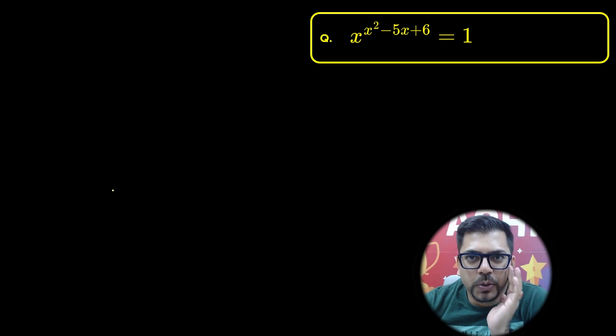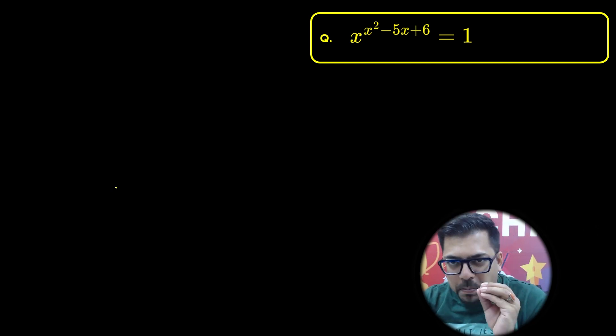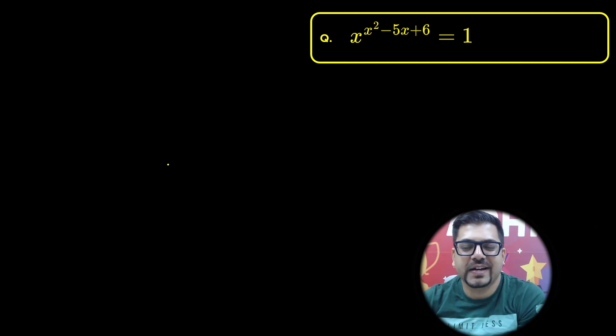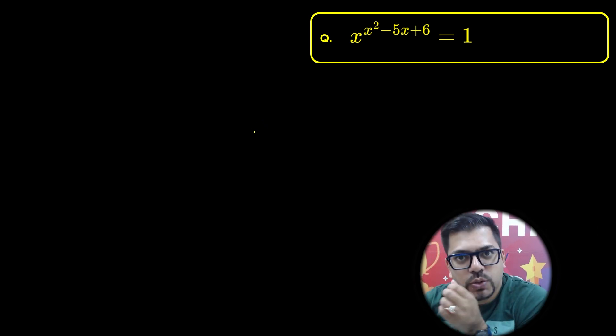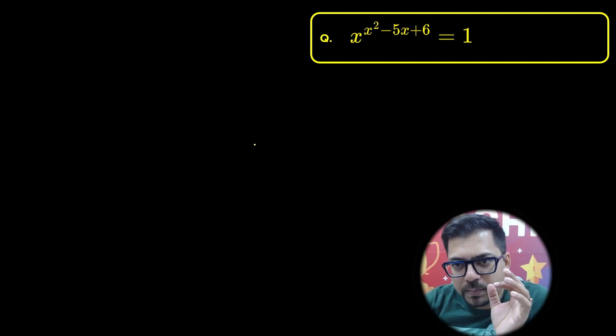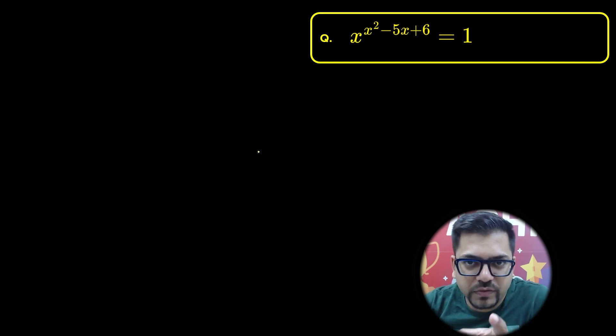Hey guys, so today we are going to talk about this very simple yet beautiful question. The question says that x raised to power x squared minus 5x plus 6, and that equals 1. Now here there will be multiple solutions to this question, and we need to understand how to approach this problem first.